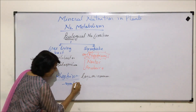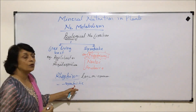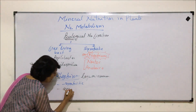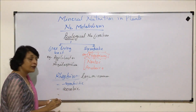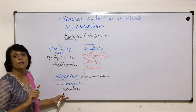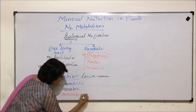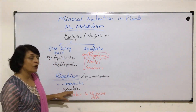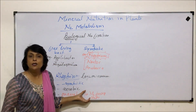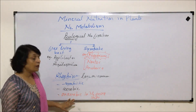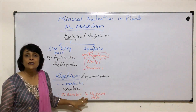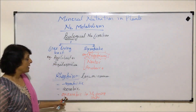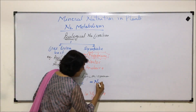Rhizobium is symbiotic, and in the symbiotic condition it helps in nitrogen fixation. If it is not in the nitrogen-fixing state, it is aerobic. Rhizobium turns anaerobic when it is in the nitrogen-fixing state. Questions have been asked about what type of respiration Rhizobium shows — Rhizobium is an aerobic bacterium, but it turns anaerobic when it has to fix nitrogen. It has an enzyme called nitrogenase.